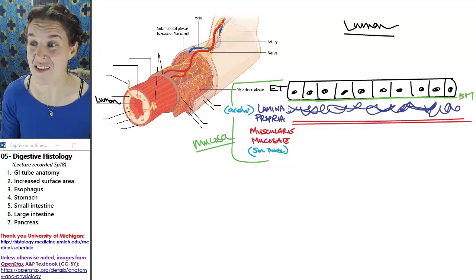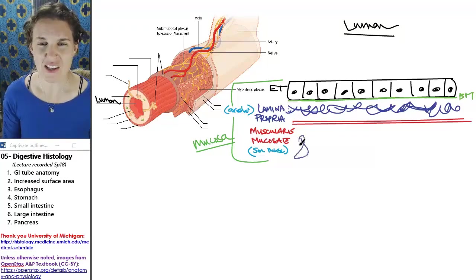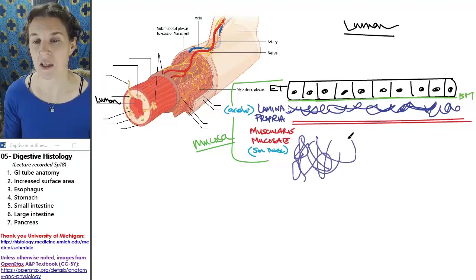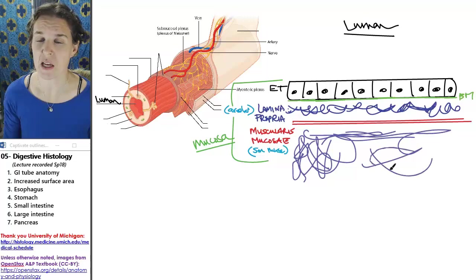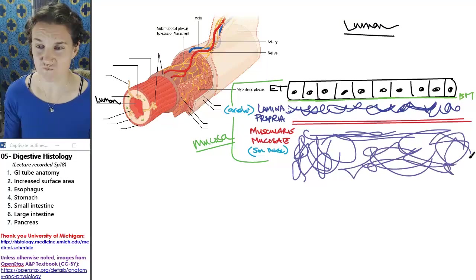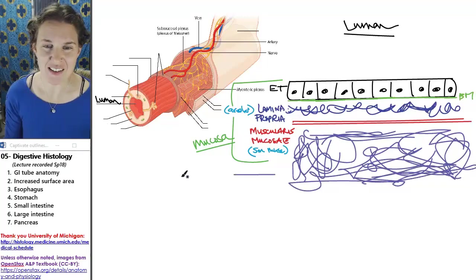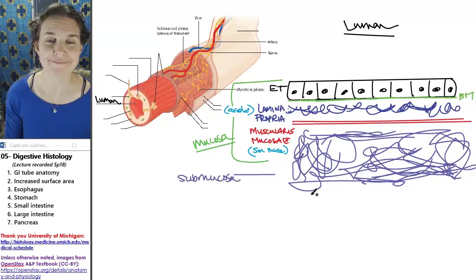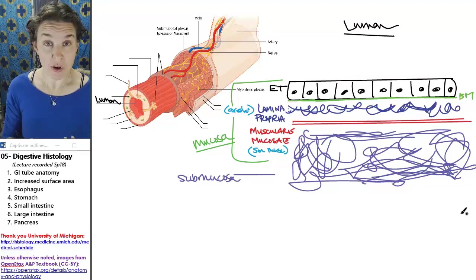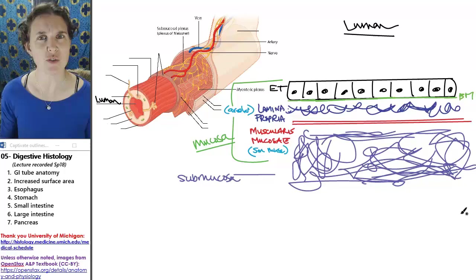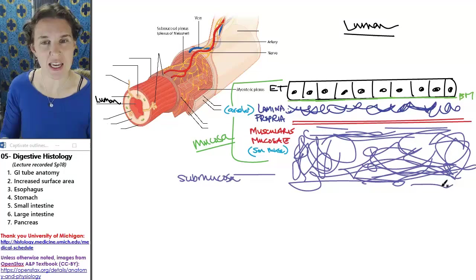There is another layer, let me make it a little bit lighter. There's another layer of connective tissue madness. And this layer is called the submucosa. It's made out of either areolar connective tissue or dense regular connective tissue. But it's definitely connective tissue and it's definitely basal to muscularis mucosae.